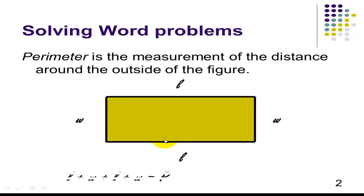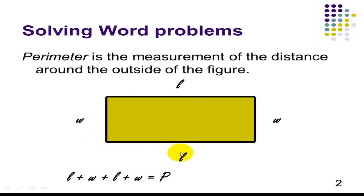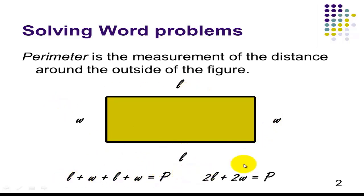If you're going to add the distance around the outside of the figure, you will have L plus W plus L plus W. If we combine like terms, we will have 2L plus 2W equals P.